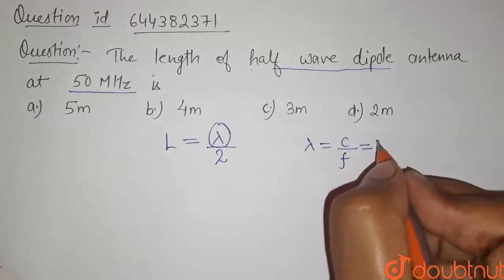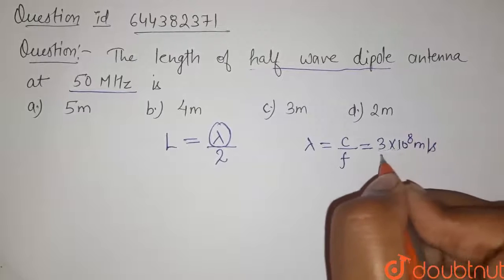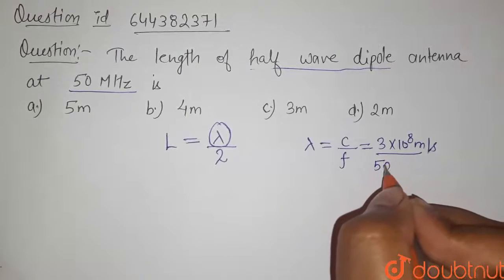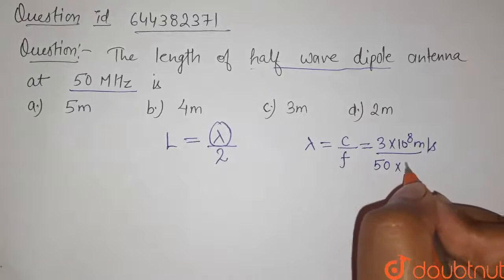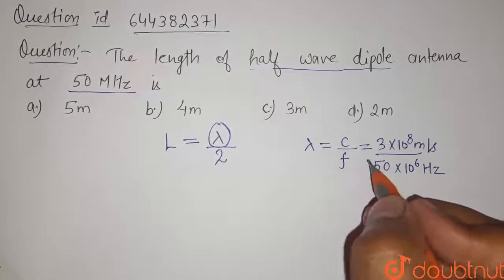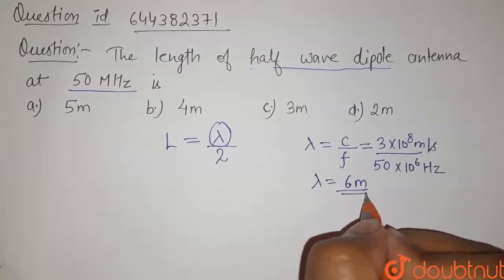The speed of wave is given by 3 into 10 to the power 8 meter per second divided by the frequency here is 50 megahertz, that means 50 into 10 to the power 6 hertz. From this we will get the value of lambda is equals to 6 meter.